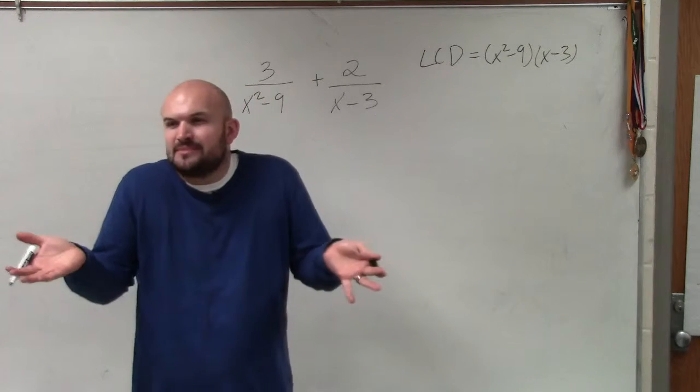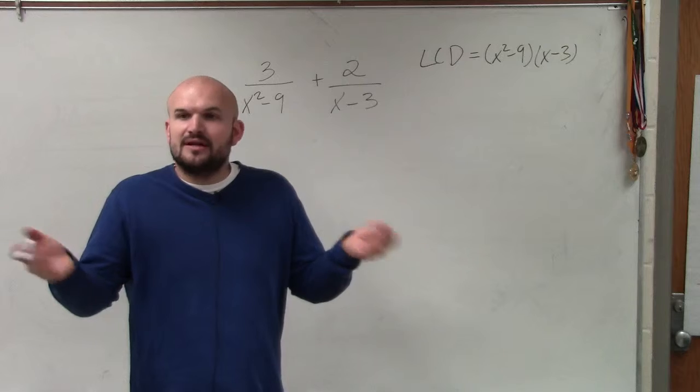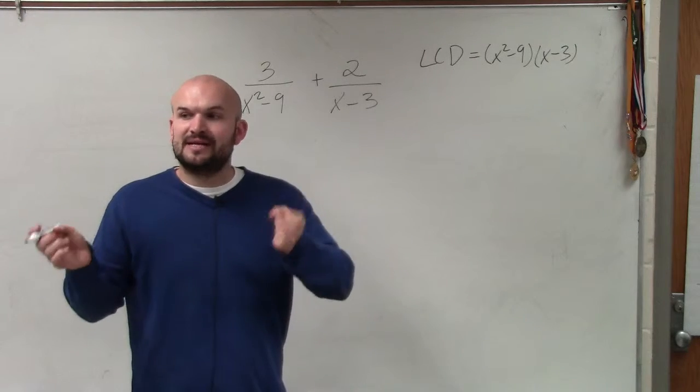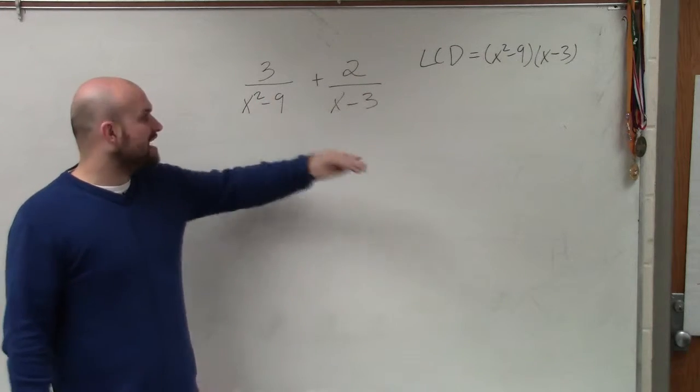Because same thing, the least common denominator of 9 and 3 is not 18 or 27. The least common denominator between 9 and 3 is actually 9. So if you have an opportunity to factor, always look to factor.